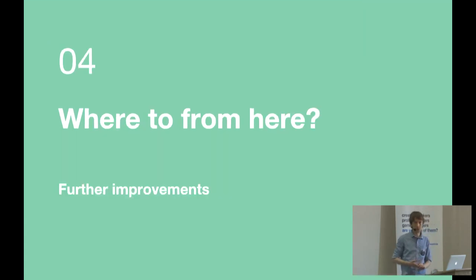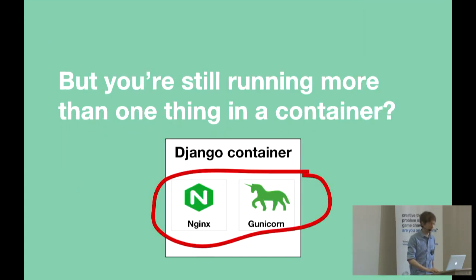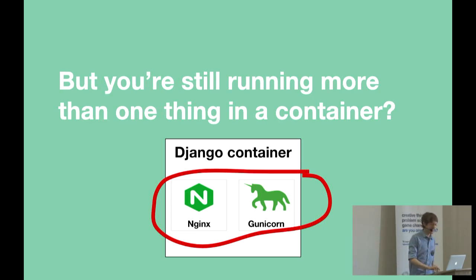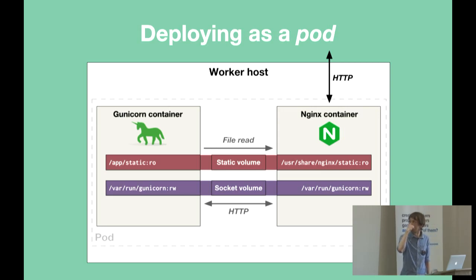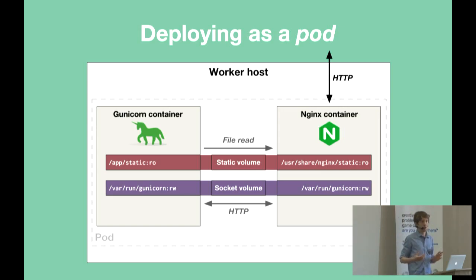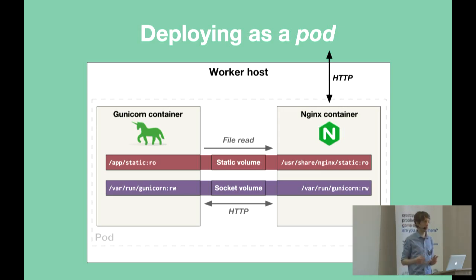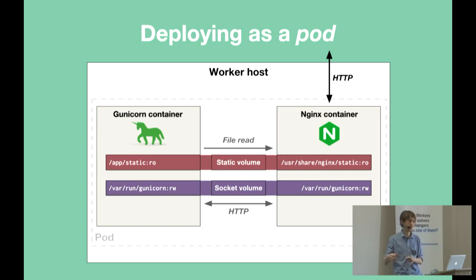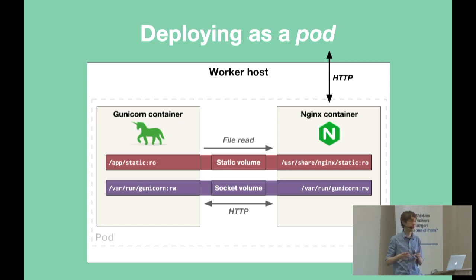There are still further improvements we think we can make to this image. You're still running more than one thing in the container, which is not good. The solution we have is what's called a pod - a concept Kubernetes started - where you essentially have multiple containers defined as co-located. These containers need to run on the same worker host at the same time, and you can share storage volumes between two containers - the static volume as well as a UNIX socket so NGINX can speak to Gunicorn.